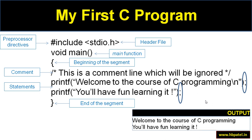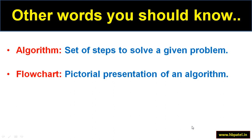When I run the program, I'll have two lines of output. The first line will be 'Welcome to the course of C programming', and then '\n' redirects to the next line, where the second line 'You'll have fun learning it' is printed.